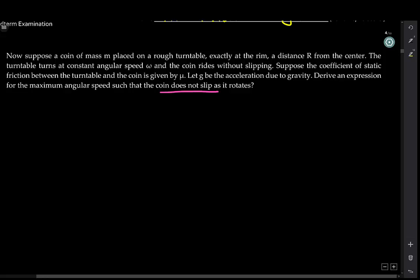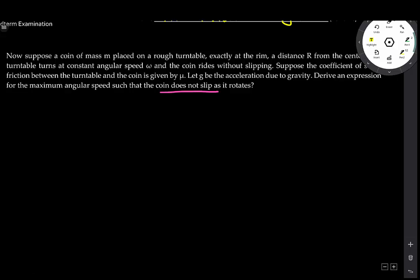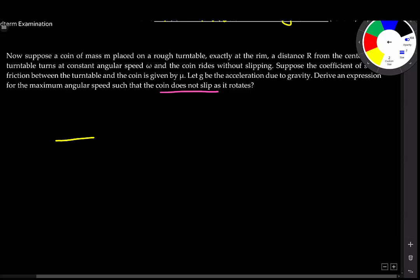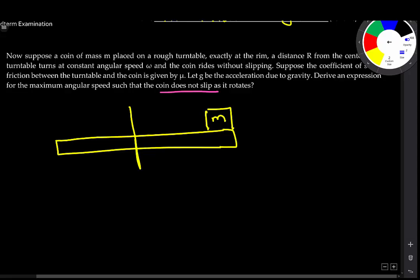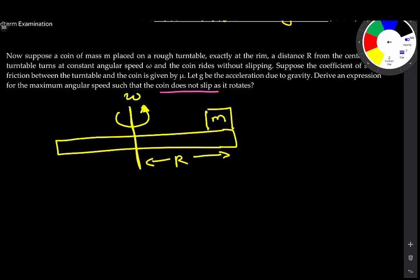Let's say we have our turntable. This is the coin of mass M, and here is our axis of rotation. It rotates right there with an angular speed omega. The distance from here to here is R. Let's do the free body diagram for the object.